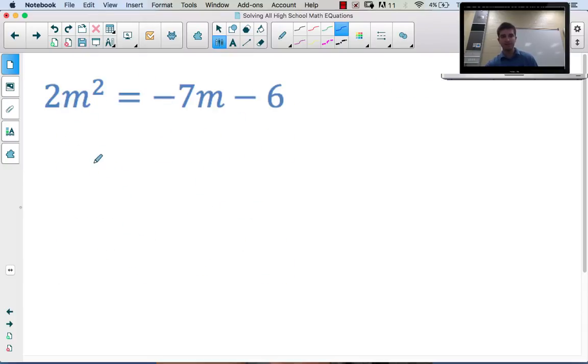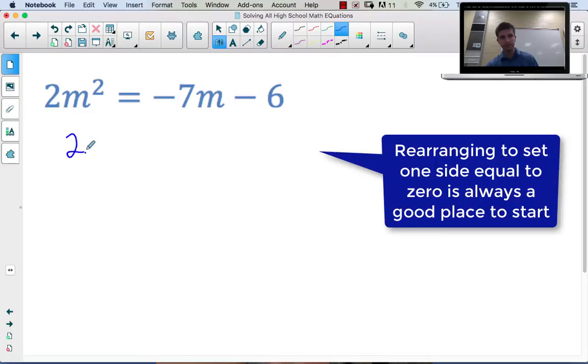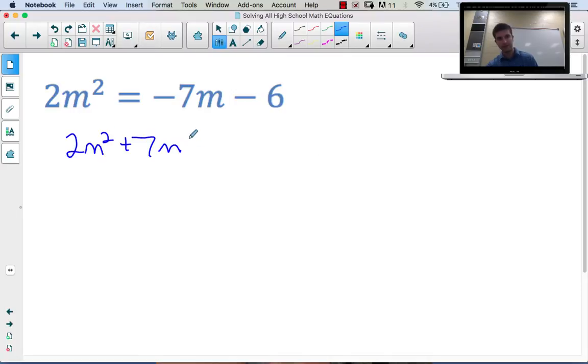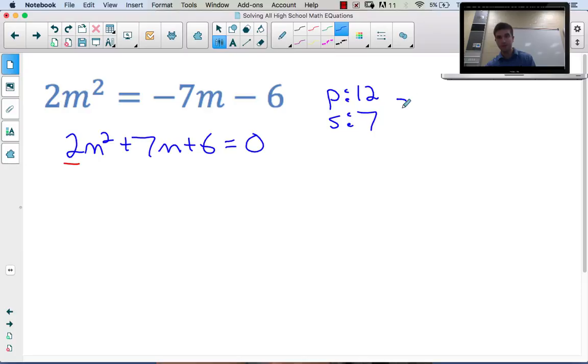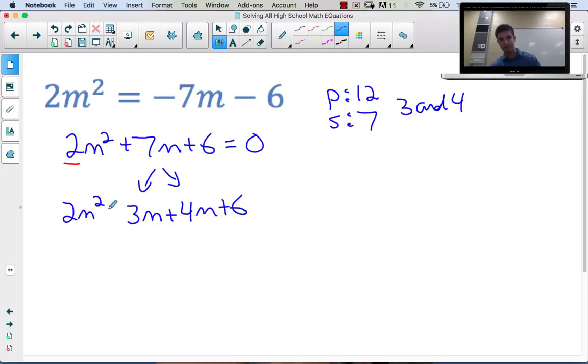Let's do another one. This one isn't set to 0, so before we factor it, rearrange so all terms are on one side. Now let's factor it. Notice this one's different because a is not 1. When we find our product and sum, we need a product of a times c, 2 times 6, which is 12, and a sum of b, which is 7. The numbers that satisfy that are 3 and 4.